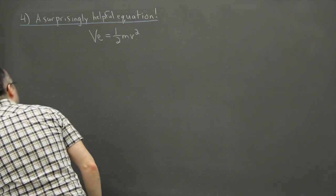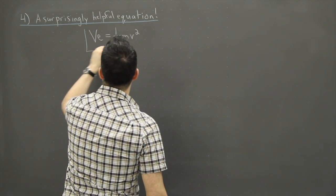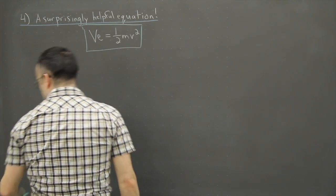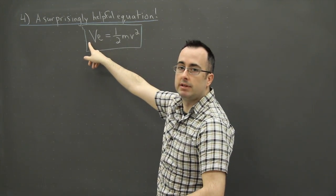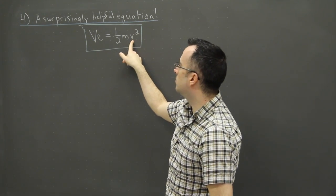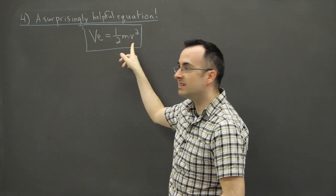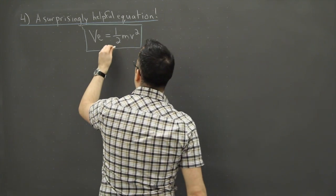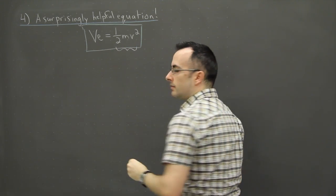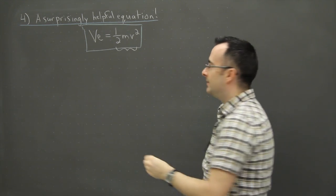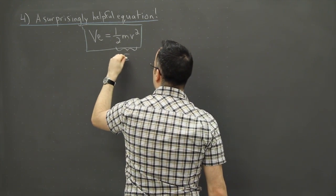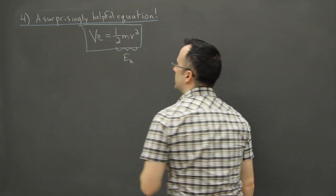This is the equation here: VE equals one-half mv squared. Now this V right here is a large one, it's a capital V, and this one here is a small v. It's important, this is a distinction here. Well, you may recognize this right here, half mv squared. Do you remember? It's kinetic energy. So that's E with a little k here, that's kinetic energy.